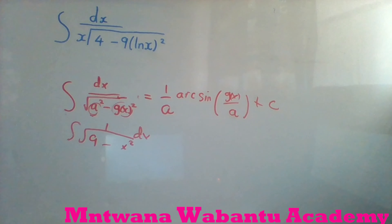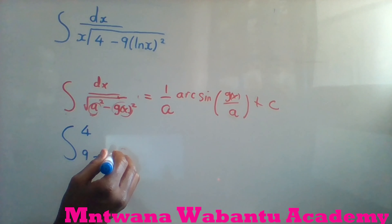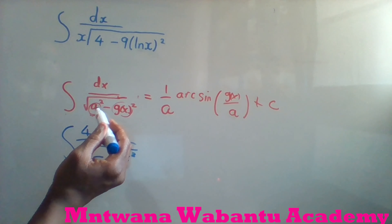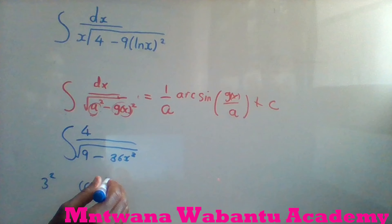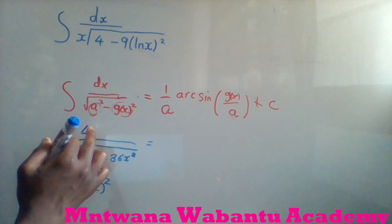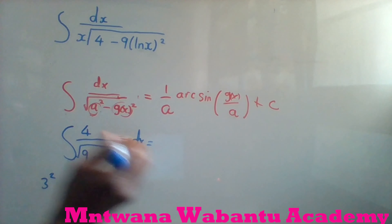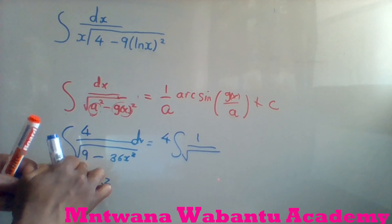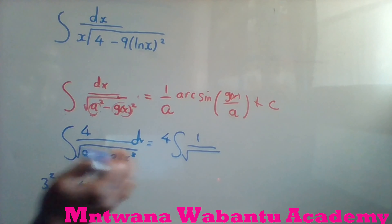For example, somebody gives you the integral of 4 over the square root of 9 minus 36x², dx. This is the same format because you have a² — so a could be 3 squared, and 36x² means (6x)². Now I'm going to rearrange this. This four is a constant, so take it outside.